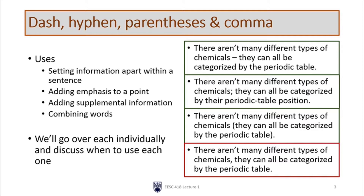To illustrate this, I've given four different versions of a fairly similar sentence using different punctuation. Each of these four different sentences means something quite different, or it can be only slightly different depending on how it's used. The first sentence uses a dash: 'There aren't many different types of chemicals — they can all be categorized by the periodic table.' In this case, the dash is going to add some emphasis to what follows.